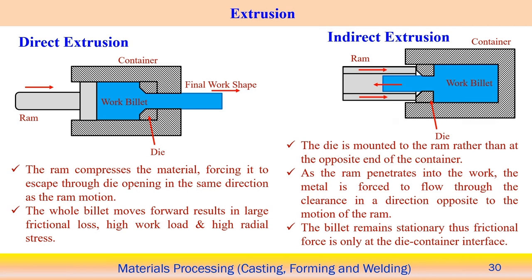In the direct extrusion process, the load is applied using the RAM on one side, forcing the metal through the die opening to produce the desired shape. Since the whole billet moves forward, there is large frictional loss due to many contact surfaces. This results in high work requirement and high radial stress associated with the direct extrusion process.